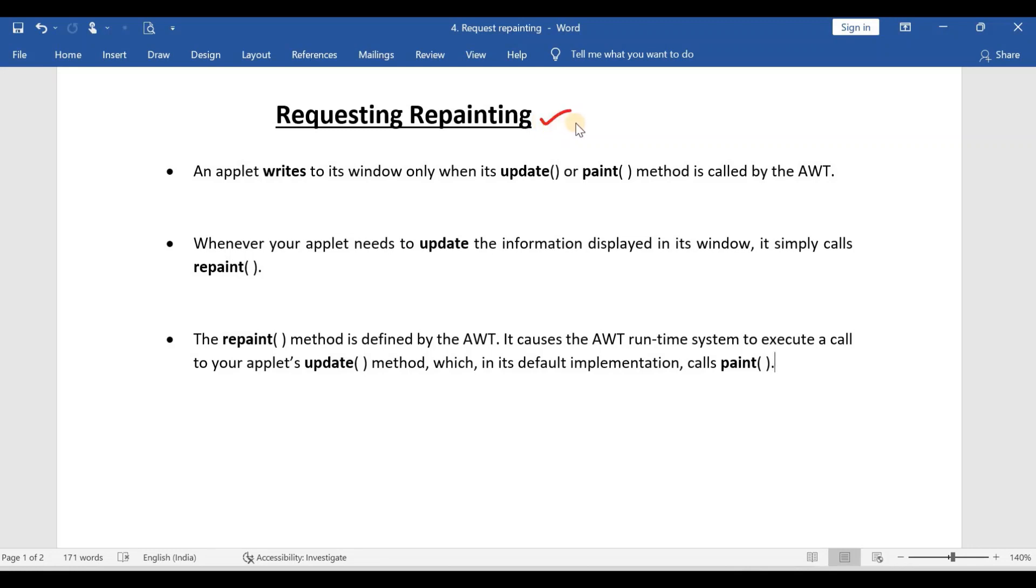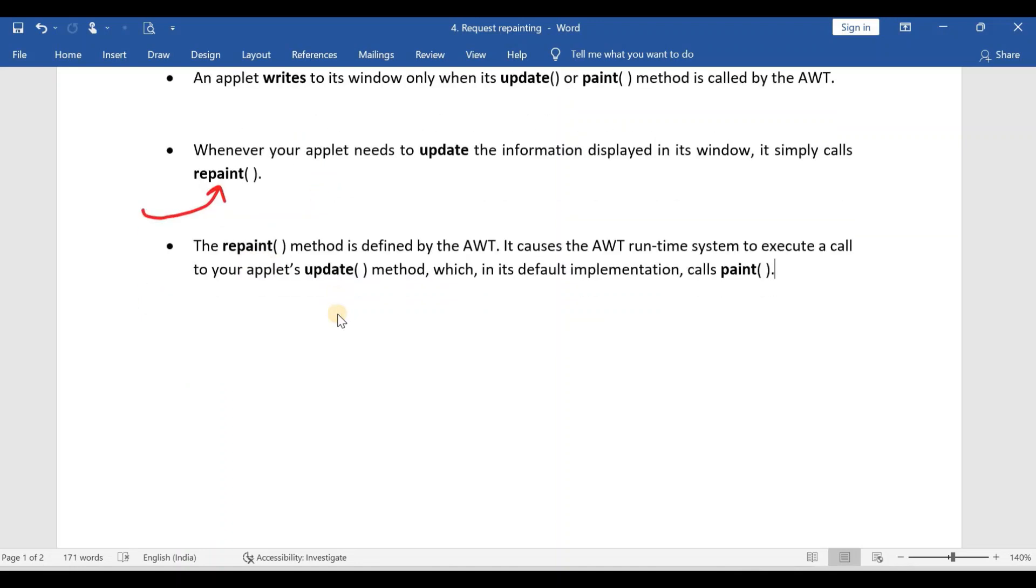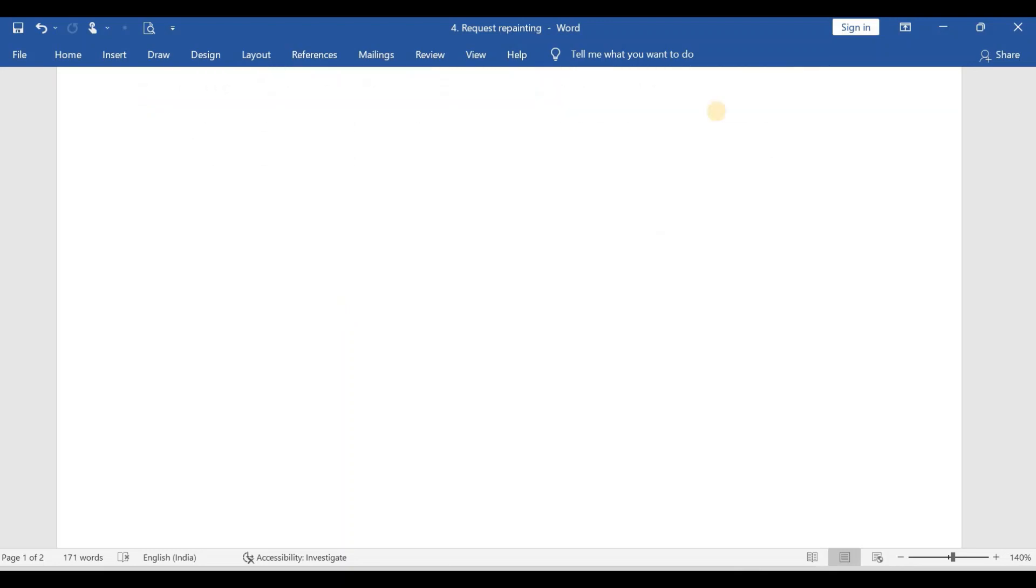This is the simplest of the topics and there are less chances of asking this question in the end examinations, but we never know what is going to happen. They might ask like this: write about the repaint method for two marks. So before I talk any points on this, I will discuss one important point.